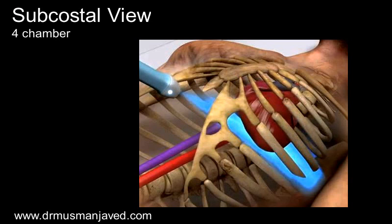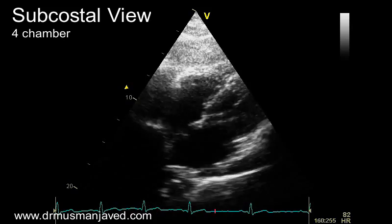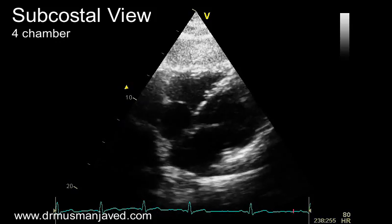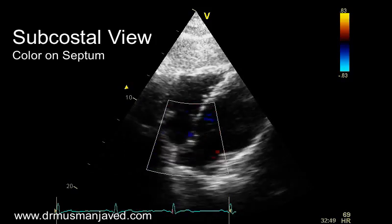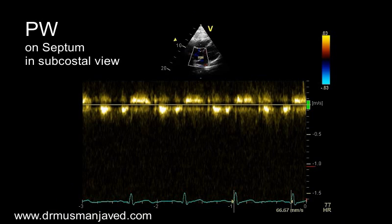The next major window is subcostal. To get the subcostal 4-chamber view, place the probe at the epigastrium with the patient in the supine position, pointer at 3 o'clock, tilt the probe anteriorly, and move the ultrasound beam in between the suprasternal notch and left clavicle. Record its 2D image. This view is particularly helpful for measuring RV thickness and to see atrial septal defect. Apply color Doppler on the interatrial septum to look for any septal defect, and get pulse wave Doppler on the septum to look for any blood flow across it.